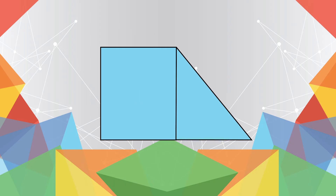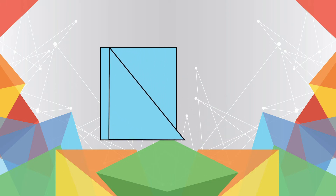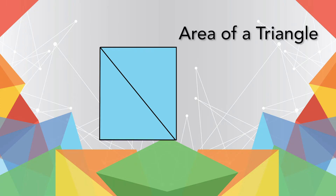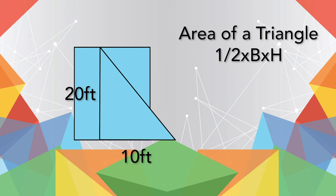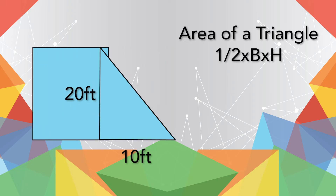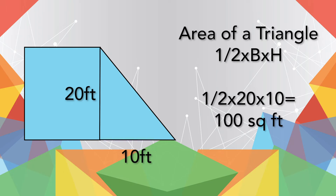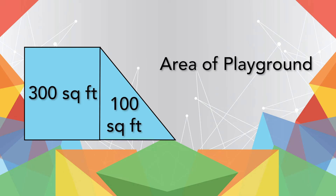If you think about it, a triangle is half a square or rectangle. So if you remember that simple fact, you'll quickly memorize the formula for finding its area: it's half the length of the base times the height. Taking our triangle with a base of 20 and a height of 10, the area would be one half of 20 — which is 10 — times 10, or 100 square feet. That means the total area of this playground is 300 plus 100, or 400 square feet.